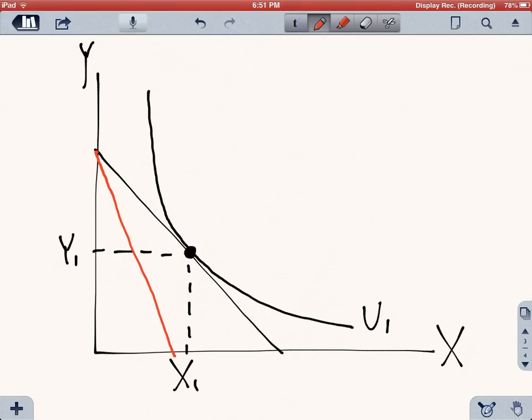So clearly the original indifference curve is not affordable to you anymore, so you're going to have to switch to an indifference curve that is actually closer to the origin. So that would be u2, and that indifference curve has a consumption of x which is lower than before.